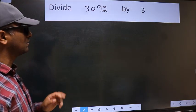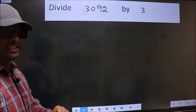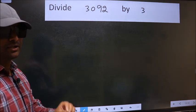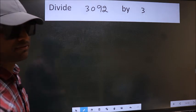Divide 3092 by 3. While doing this division, many do this mistake. What is the mistake that they do? I will let you know. But before that, we should frame it in this way.